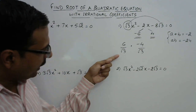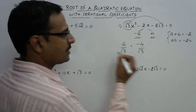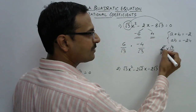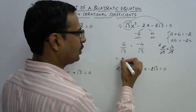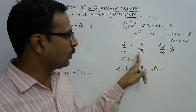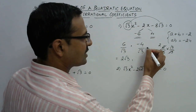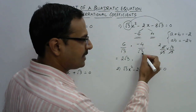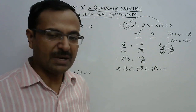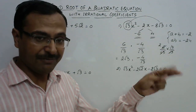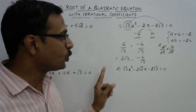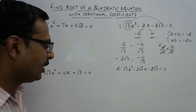Rationalizing, 6/√3 becomes 6√3/3, so 3 cancels with 6 giving 2√3. For the second factor, rationalizing gives -4√3/3, which can be left as -4/√3 if already in simplest form. So the two roots of this quadratic equation are 2√3 and -4/√3.